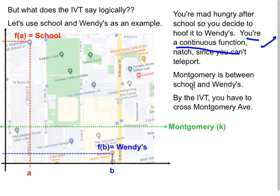Second thing, Montgomery, which is the value that I called k is physically between the Wendy's and the school, which would be the two outputs. So there's no way that you walk to Wendy's without crossing k.